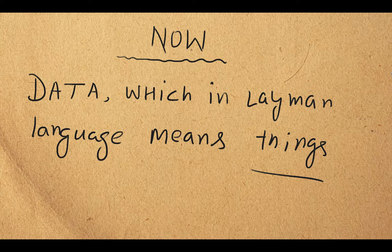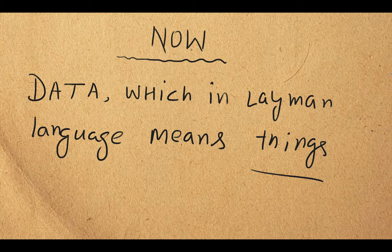So we have two categories. One is data that can be changed, updated, or modified. The other category is data which should not change, or which we do not want to change. These are the two categories under which data can be placed, and it's for our ease.